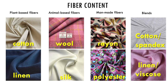Now let's talk about fiber content. Fibers can be plant-based, animal-based, man-made, or a blend. Plant-based fibers are made from fibers that occur naturally on plants like cotton, linen, or hemp. These kinds of fibers are easy to launder, easy to press, and they tend to be long-lasting. They tend to be crisp, prone to wrinkling, and breathe very well.